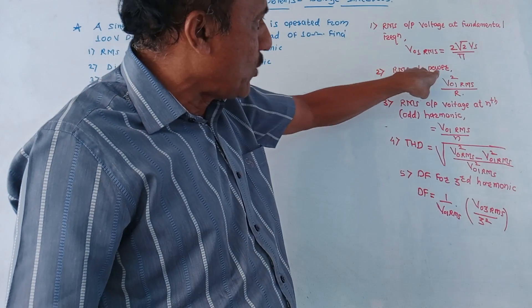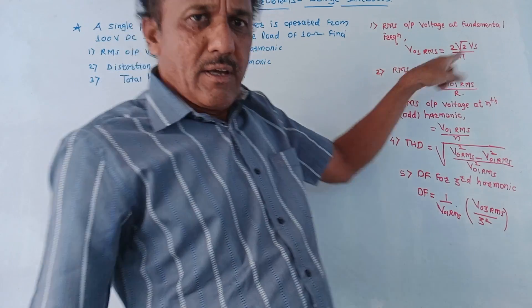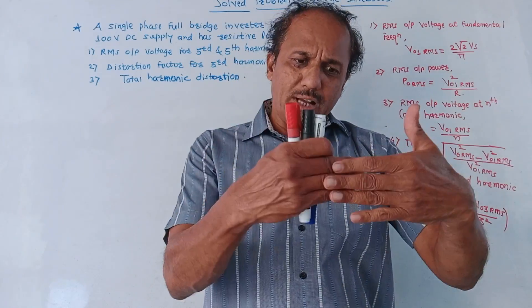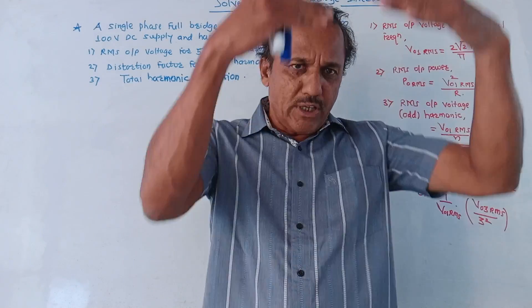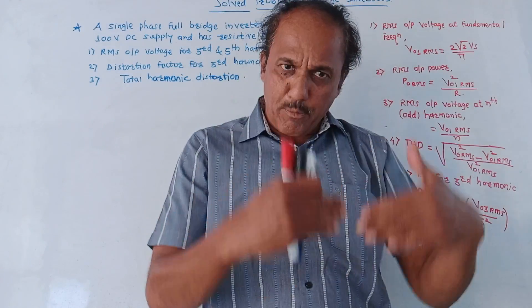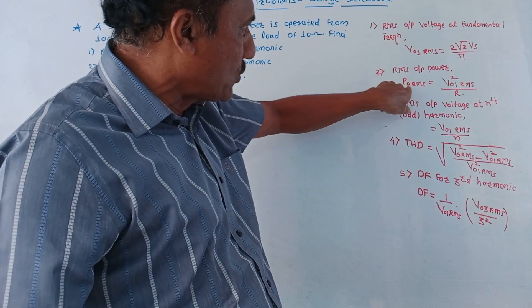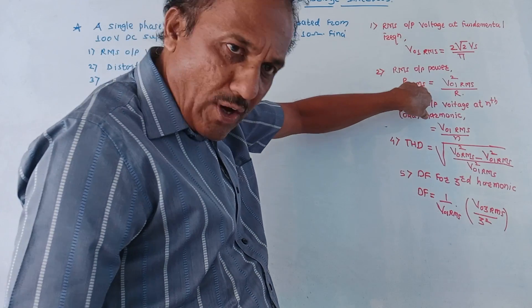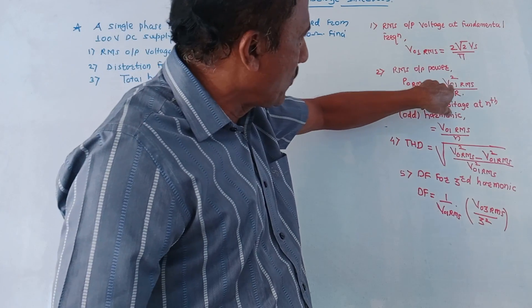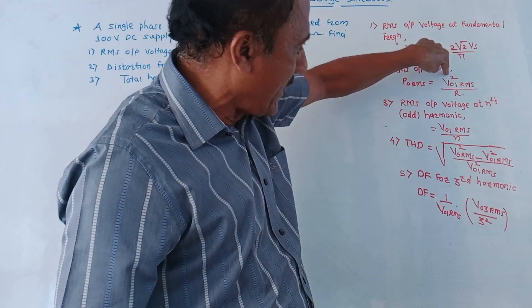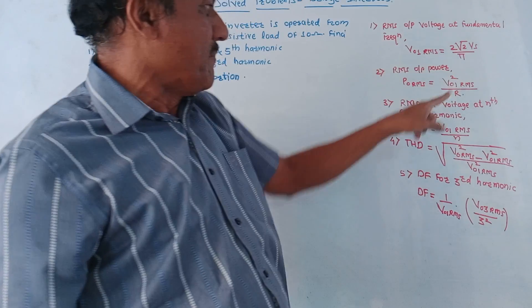Second formula is RMS output power. The basic formula for power is voltage squared upon R. So P0RMS equals V01RMS squared upon R.